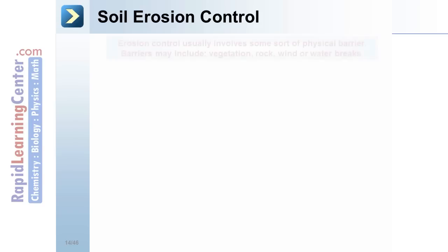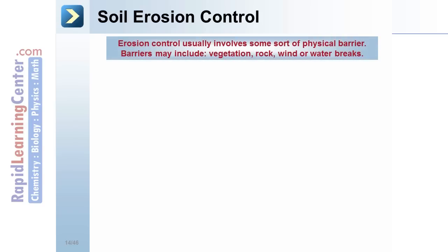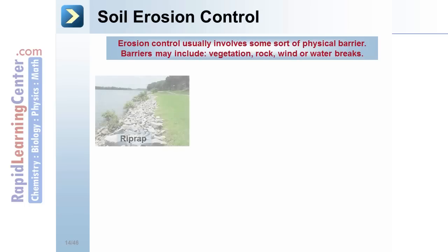Erosion control usually involves some sort of physical barrier. Barriers may include vegetation, rock, wind, or water breaks. A riprap reduces the erosion of the banks along a river or a lake.